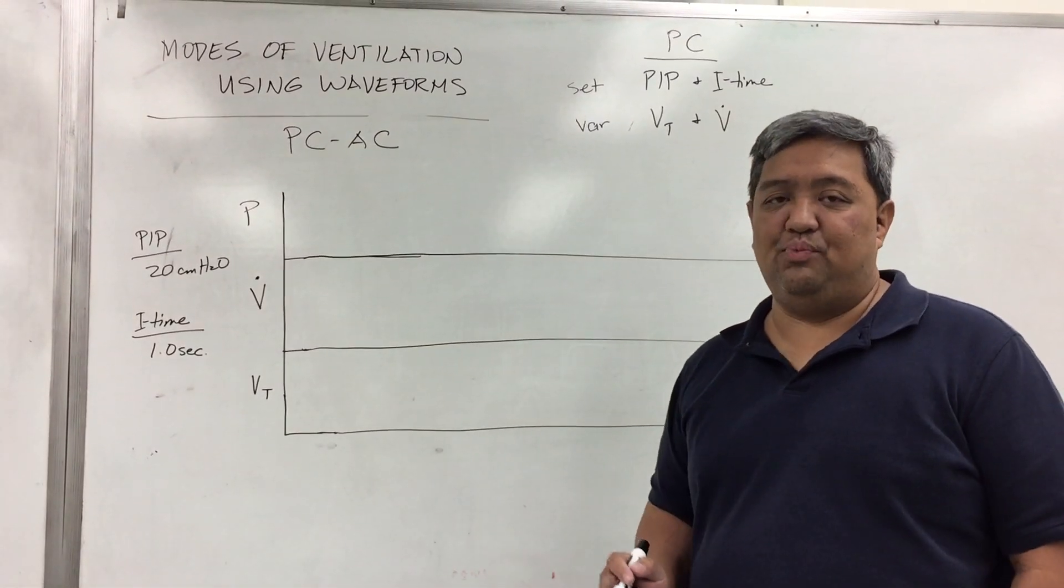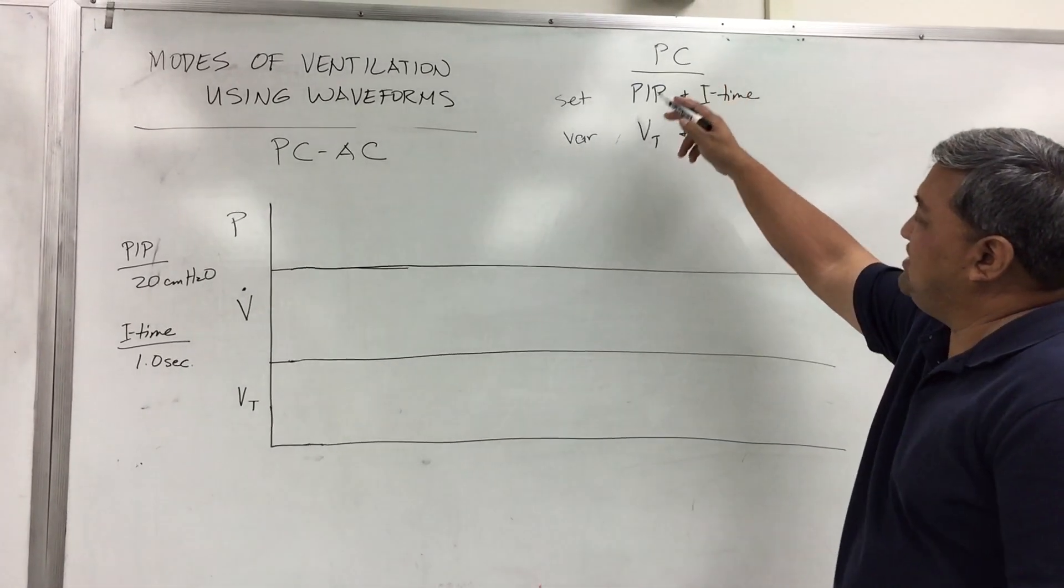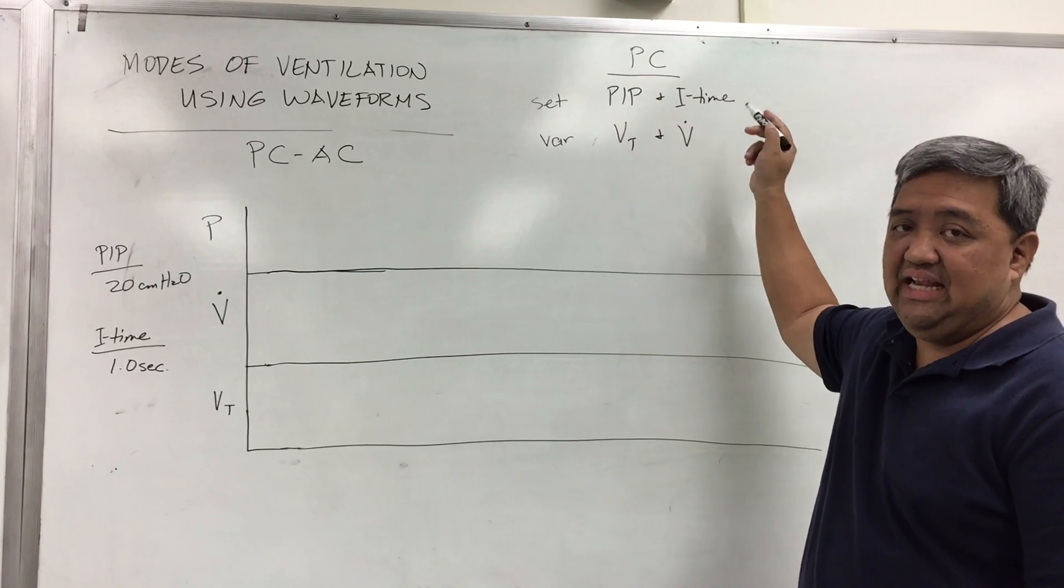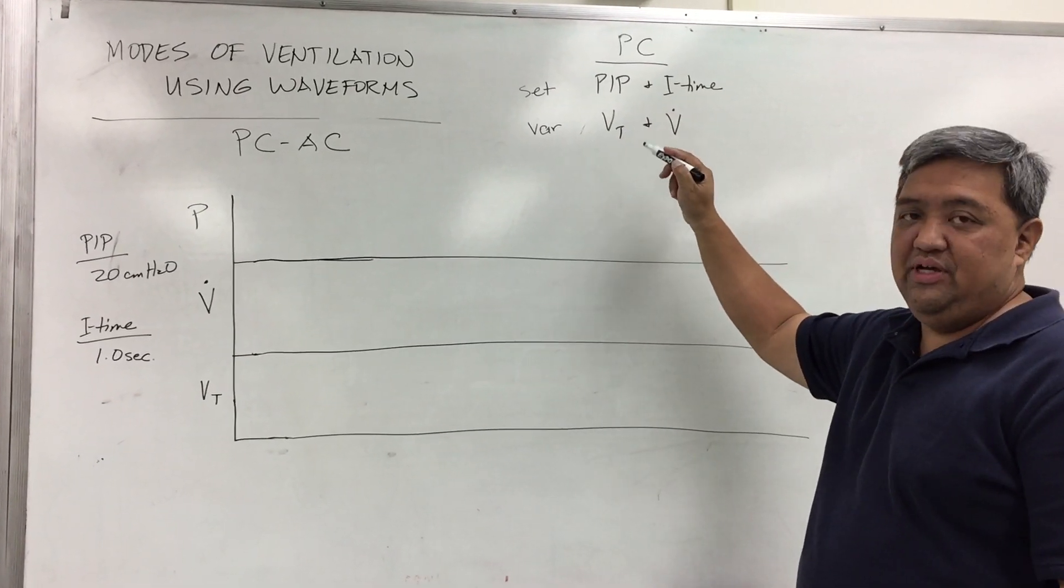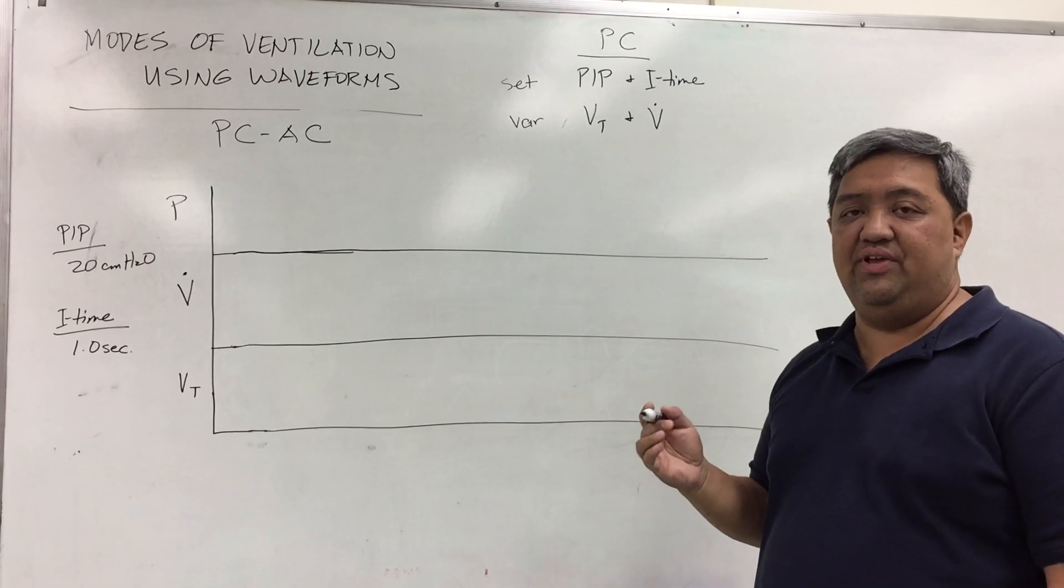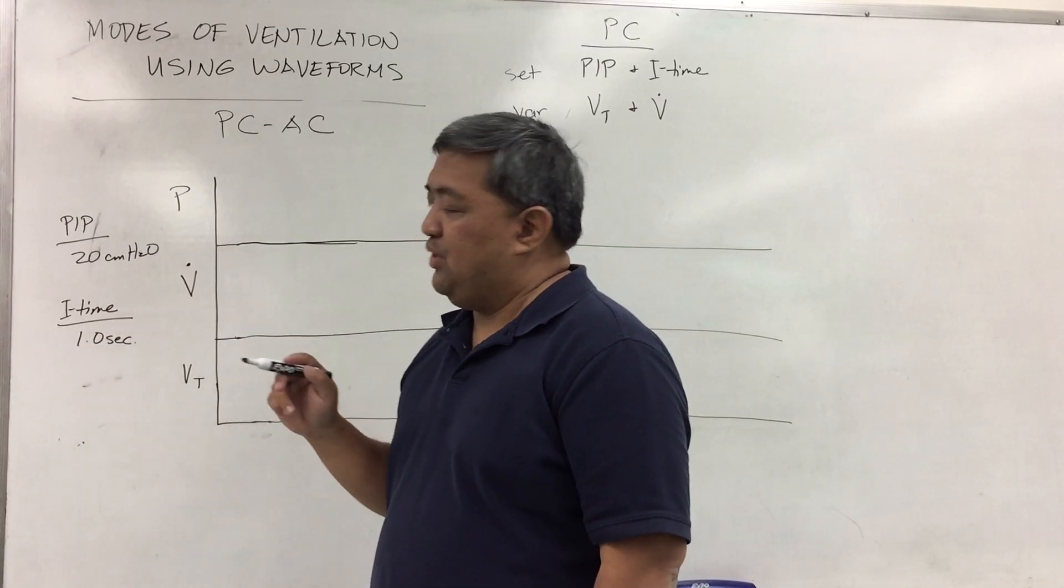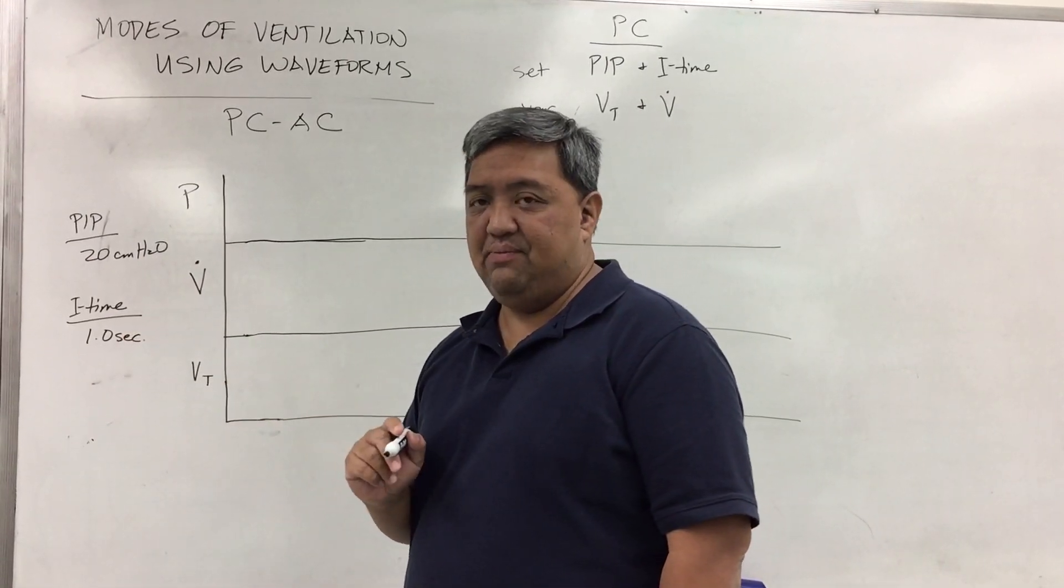Next, we're going to talk about Pressure Control AC. With pressure control, the difference now is the set PIP and the set I time. The variables are volume and flow, depending on the resistance of the airways and compliance of the lungs. Let's say we have a set pressure of 20 and an I time of one second.